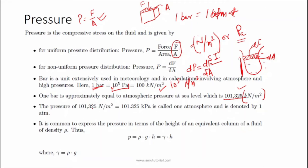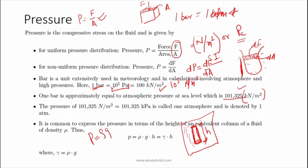Pressure is generally expressed in terms of the height of an equivalent column of fluid. Suppose this is a column of fluid, a control volume filled with water, and we take a water column of height h. In that case the pressure will be equal to rho times g times h, which equals gamma times h — the pressure in terms of head or height of an equivalent column of fluid.